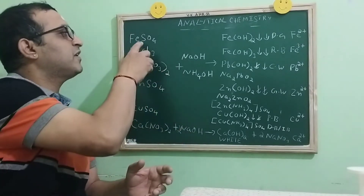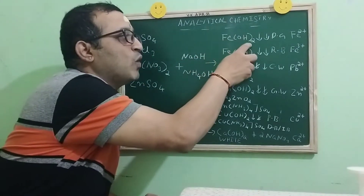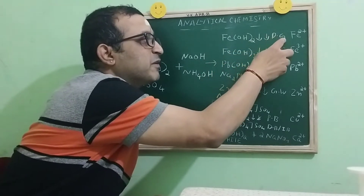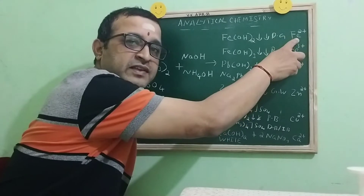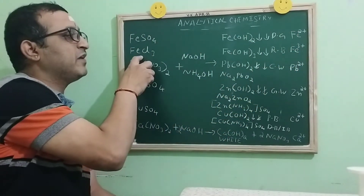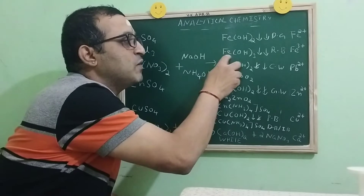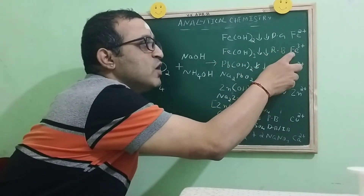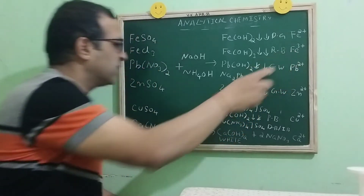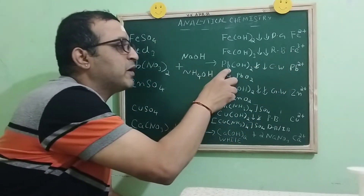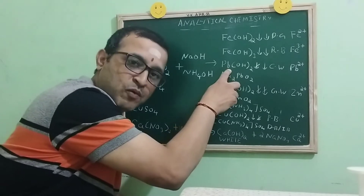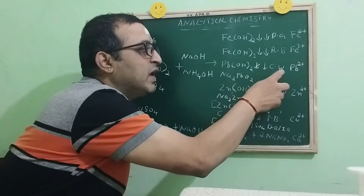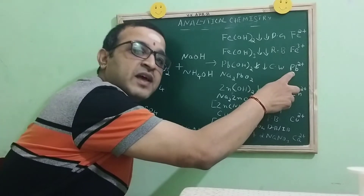For example, the first salt ferrous sulfate will produce Fe(OH)2 whose color is dirty green precipitate and the cation is Fe2+. FeCl3 will produce a precipitate of Fe(OH)3 whose color is reddish brown and the cation is Fe3+. In case of lead nitrate, it produces a precipitate of Fe(OH)2 and the color of the precipitate is chalky white and the cation is Fe2+.